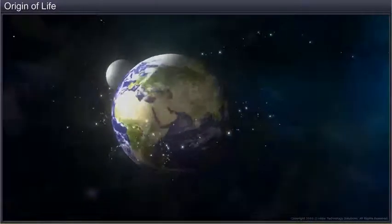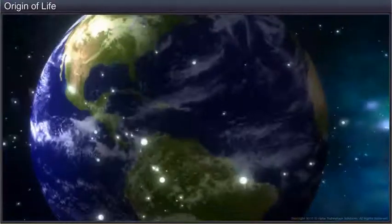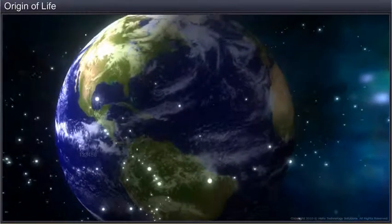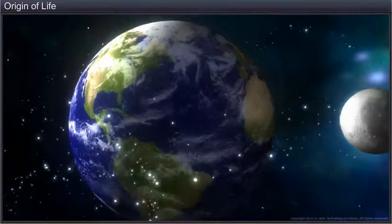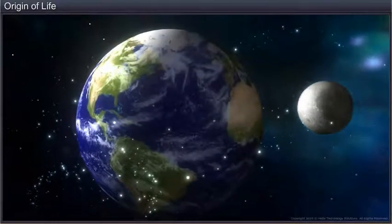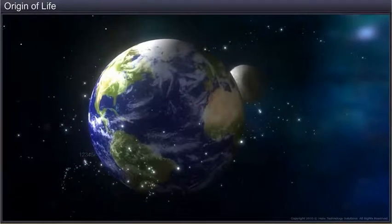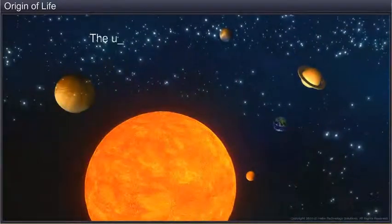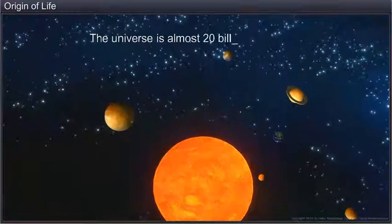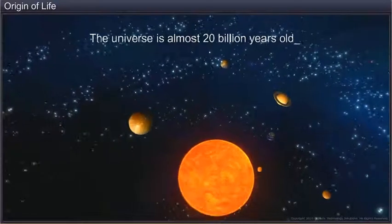The origin of life forms or biodiversity is interlinked with the evolution of the Earth, which is again closely associated with the evolution of the universe. The universe is vast, comprises many galaxies, and is almost 20 billion years old.